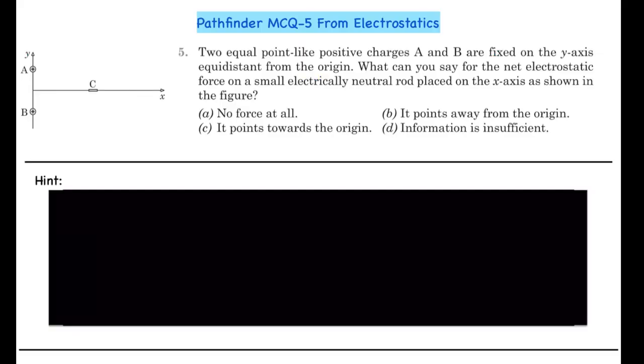Hello guys, here we have question number five from the MCQ exercise of the chapter Electrostatics from Pathfinder. Let's first look at the question: Two equal point-like positive charges A and B are fixed on the y-axis equidistant from the origin. What can you say for the net electrostatic force on a small electrically neutral rod placed on the x-axis as shown in the figure? We have four options: (a) no force at all, (b) it points away from the origin, (c) it points towards the origin, or (d) the information is insufficient. If you want to try this question yourself, you can do it now.